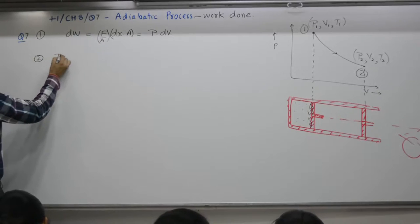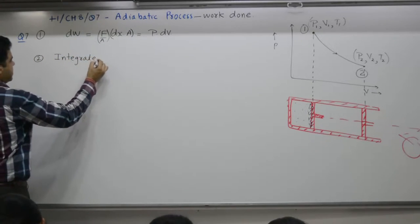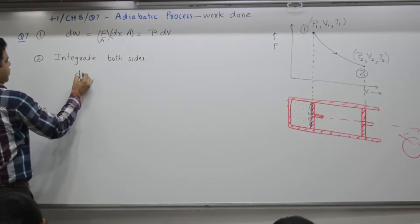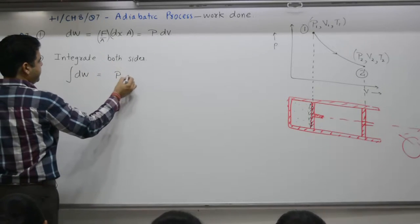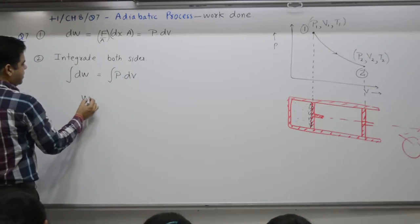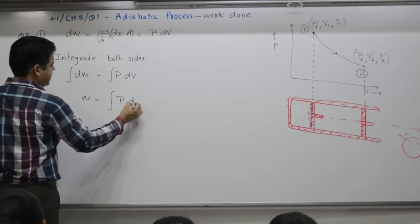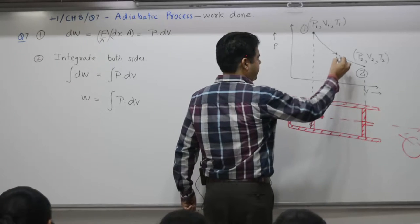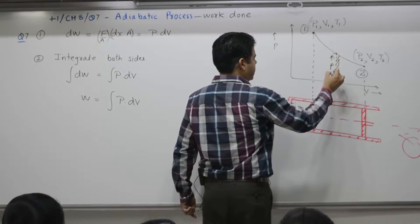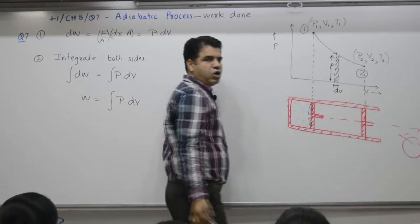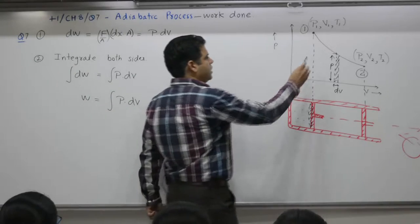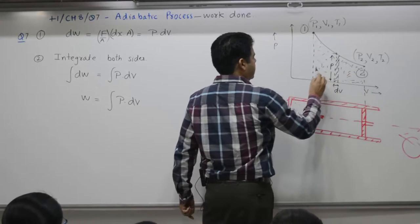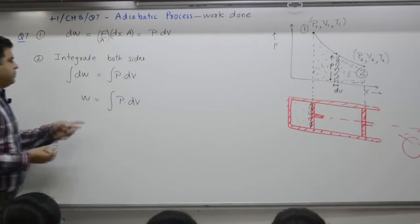Step two: integrate both sides. If you integrate dW, on the other side it is P·dV. What you get is work is equal to integration of P·dV. This small work done is this small area. This is P, this is dV. Small shaded area gives you small amount of work done. Total work done is area enclosed, area marked here.